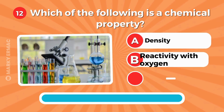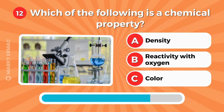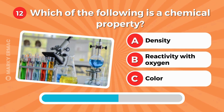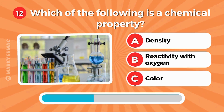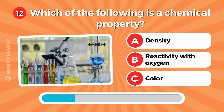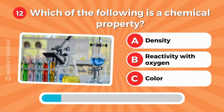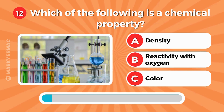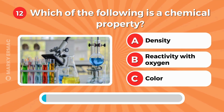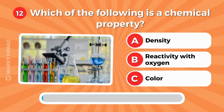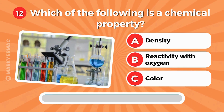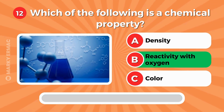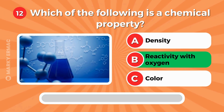Which of the following is a chemical property? Density, reactivity with oxygen, or color? The correct answer is B — reactivity with oxygen.